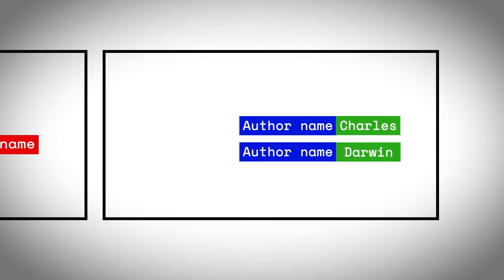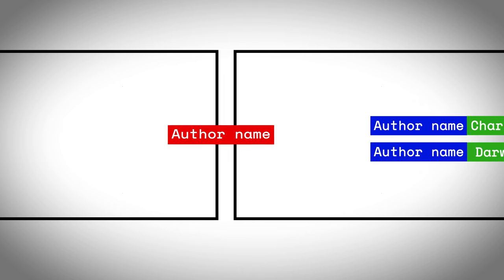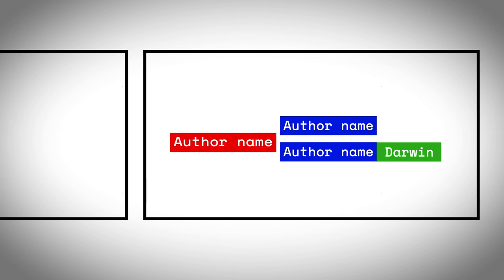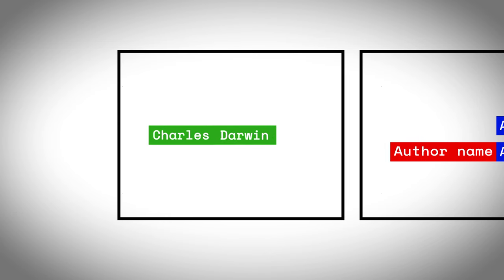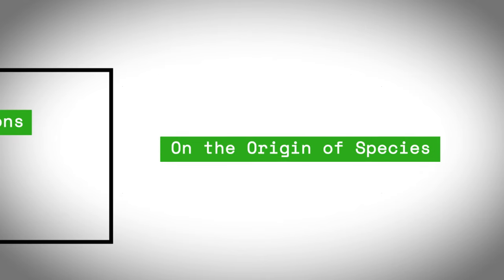For instance, we can imagine a component specialized in author names sending out a key that essentially means 'I have an author name on offer.' The component specialized in book titles might send out a query asking for author names. And because the key and query match, the relevant information — 'Charles Darwin' — is sent from the first to the second component, where it is in turn sent to yet another component that has stored book titles associated with specific names.